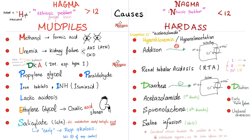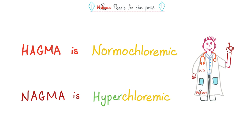The moral of the story is: HAGMA is normochloremic but NAGMA is hyperchloremic. In HAGMA, the anion gap is high but serum chloride is normal. In NAGMA, the anion gap is normal but chloride is high. It's all about electroneutrality — it's in the nature of things.